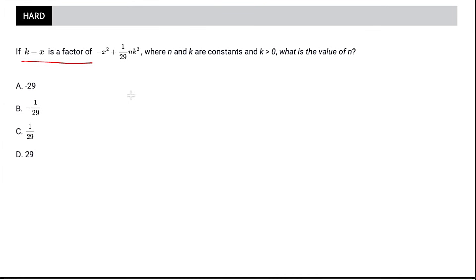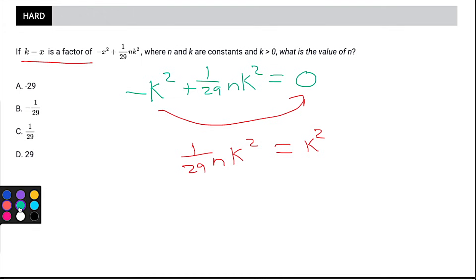Instead of negative x squared, we're going to have negative k squared plus 1 over 29 nk squared equals 0. And if we're trying to solve for n, we probably want to get rid of k. We could move k over to the right side of the equation by adding it. So then we have 1 over 29 nk squared equals k squared. Since k squared's on both sides of the equation, let's divide by k squared to get rid of it. And then k squared divided by k squared is just going to be 1. We're just left with 1 over 29 n. Now we multiply the right side by 29 to get rid of the fraction, and n equals 29, just like that.